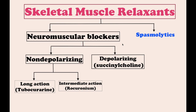Most neuromuscular blockers are antagonists of the non-depolarizing type, and the prototype is tubocurarine. One neuromuscular blocker used clinically, succinylcholine, is an agonist of the nicotinic end plate receptor — that's why we call it the depolarizing type. Neuromuscular blocking drugs do not enter the central nervous system and have no effect on cognition, memory, or sensory input, including perception of pain.